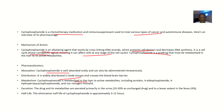For metabolism, cyclophosphamide is metabolized in the liver to its active metabolites. Some of its active metabolites include acrolein, 4-aldophosphamide, 4-hydroperoxycyclophosphamide, and nor-nitrogen mustard.